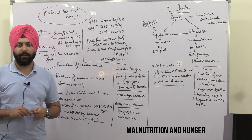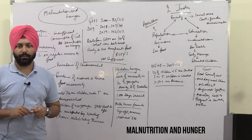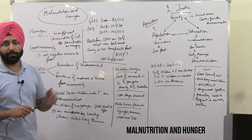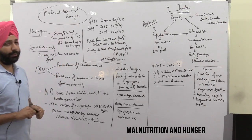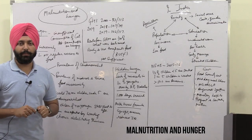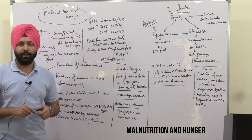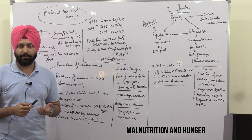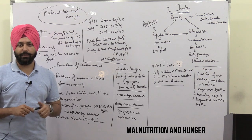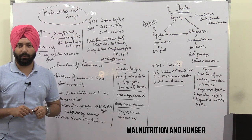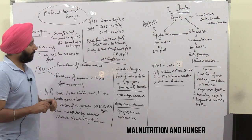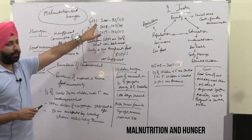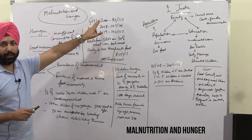Hello students, today we are going to discuss a topic from current affairs — malnutrition and hunger. Recently, Abhijit Banerjee was awarded the Nobel Prize in Economics for his work on global poverty, so this topic becomes very important. And along with that, the Global Hunger Index is also relevant here.